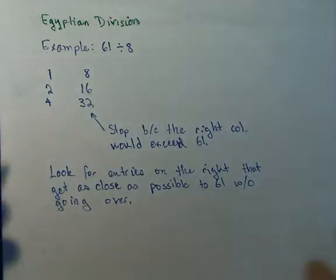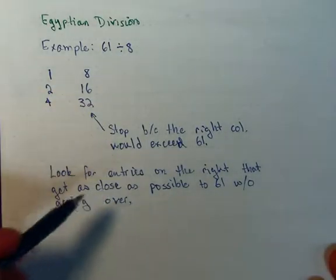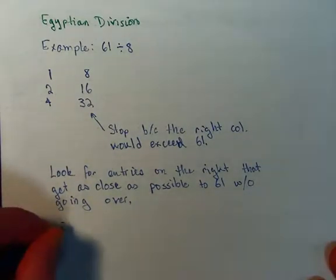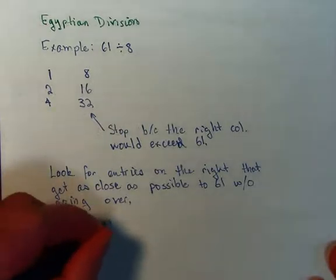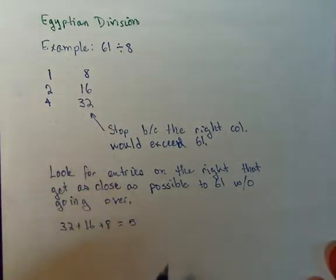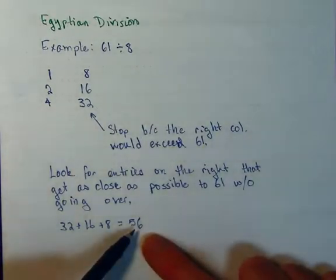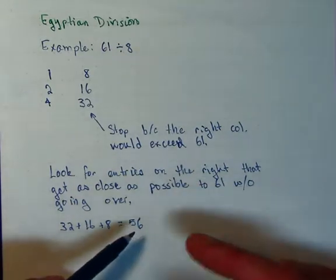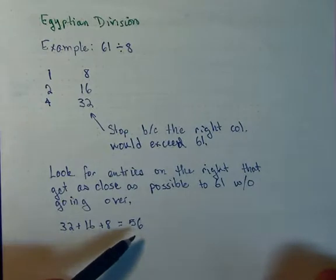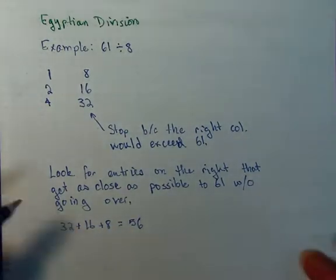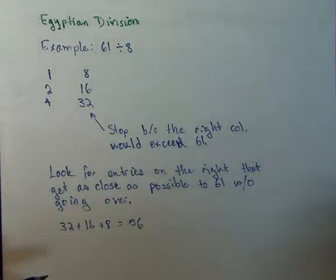In this particular case, it looks like I have to add up all of them to get as close as possible to 61. If I take 32 plus 16 plus 8, it looks like that gives me 56. Now, this is not quite coming out even, and we shouldn't expect the division of two whole numbers to come out even. Most of the time, there will be some left over, some remainder to deal with. In this case, it looks like a remainder of 5.